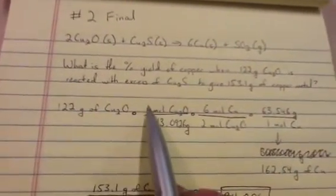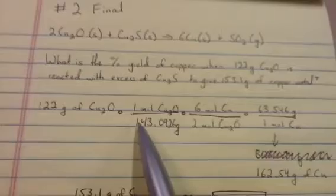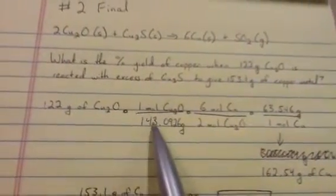So I'll take 122 grams of copper oxide and I'll do dimensional analysis. I'll convert this over to moles. So I've got 122 grams. I need moles. So I set this ratio here. One mole of copper oxide over 143.0926 grams. Because I know that that is the formula mass of copper oxide. I use formula mass and not molecular mass because this is indeed an ionic compound and not a covalently bonded. And so in that case, this should be a formula mass.